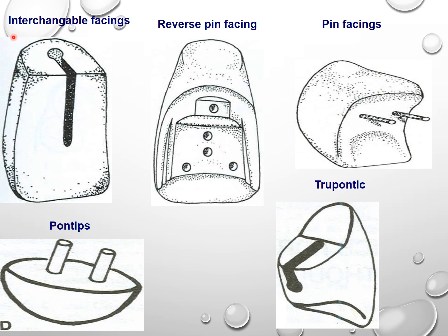For example, an interchangeable facing is manufactured with a vertical slot running down the flat lingual surface. This facing is retained with a substance which engages the retention of the slot. The other end will have a retention key and will be fixed inside.